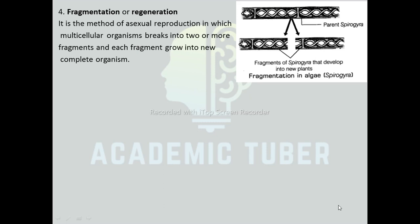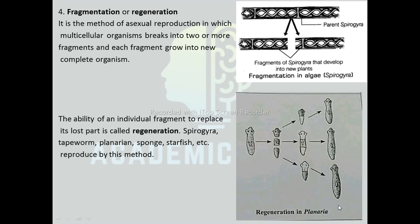In Spirogyra, the parent organism breaks into two fragments and each fragment gives rise to a new Spirogyra. Regeneration is the ability of an individual fragment to replace its lost part. Organisms like Spirogyra, Tapeworm, and Planaria reproduce by this method. Here is a diagram showing Regeneration in Planaria — the parent Planaria is cut into three parts, and each part regenerates its lost part, ultimately giving rise to three new Planaria.